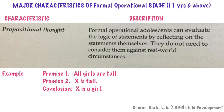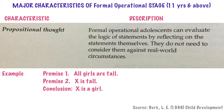Another important characteristic of formal operational stage is propositional thought, which means that adolescents can evaluate the logic of statements by reflecting on the statements themselves — they do not need to consider them against real-world circumstances. For example, premise 1: all girls are tall; premise 2: X is tall; conclusion: X is a girl. Children at the formal operational stage can examine these premises on the logic inherent in them. They can judge these statements within their minds and apply logic to say whether the conclusion is true or not.